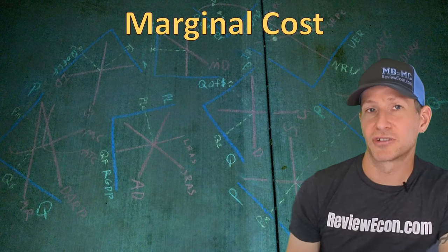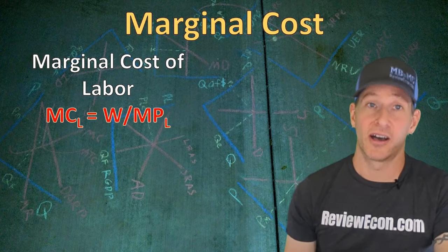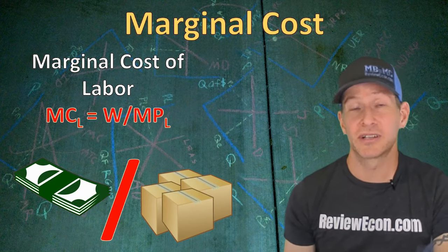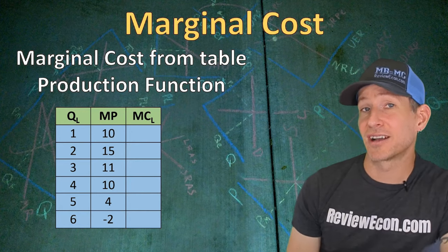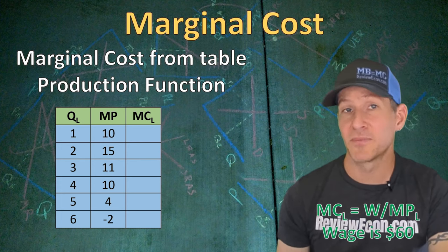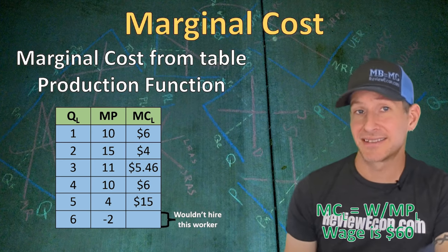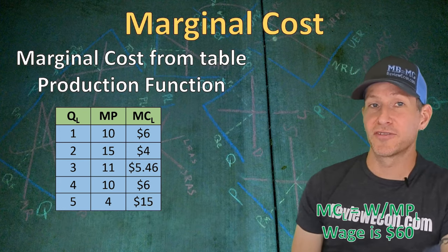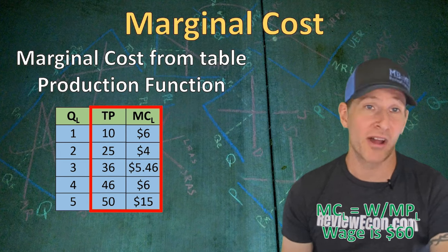The final thing we're going to talk about is the marginal cost of labor. The marginal cost of labor is the wage that workers are paid divided by the marginal product of those workers. The wage divided by the marginal product gives us the marginal cost of the units those workers produced. Adding a marginal cost of labor column to our production function, with a wage of $60 per worker, we take that $60 and divide by the marginal product to get the marginal cost of output for each worker. We won't calculate the marginal cost for the sixth worker's output because a rational firm would not hire a worker with a negative marginal product.